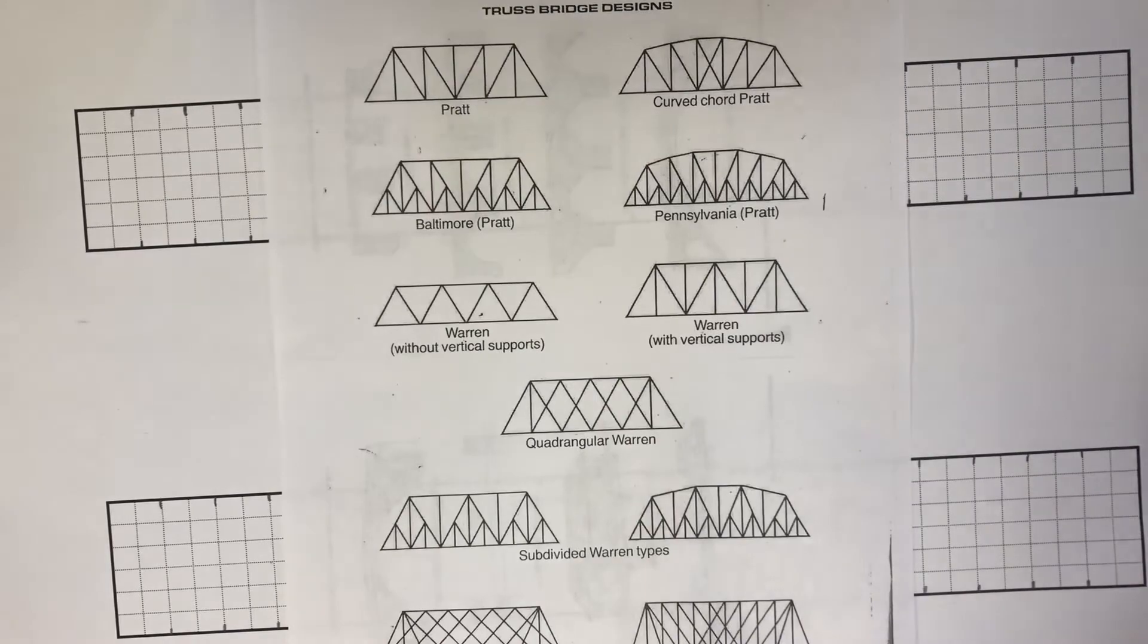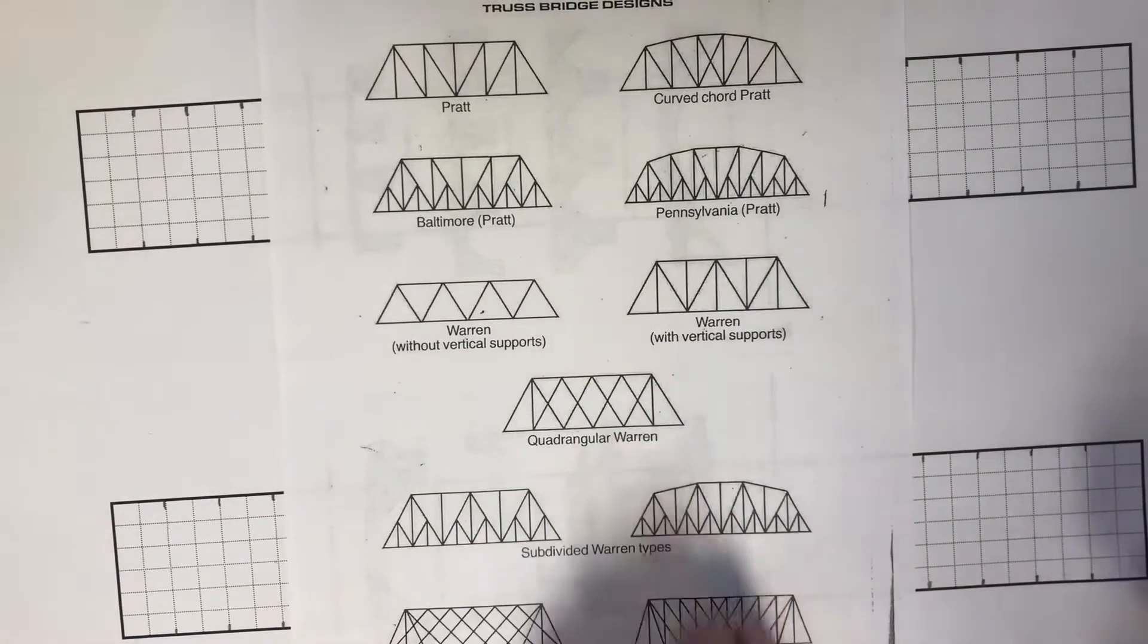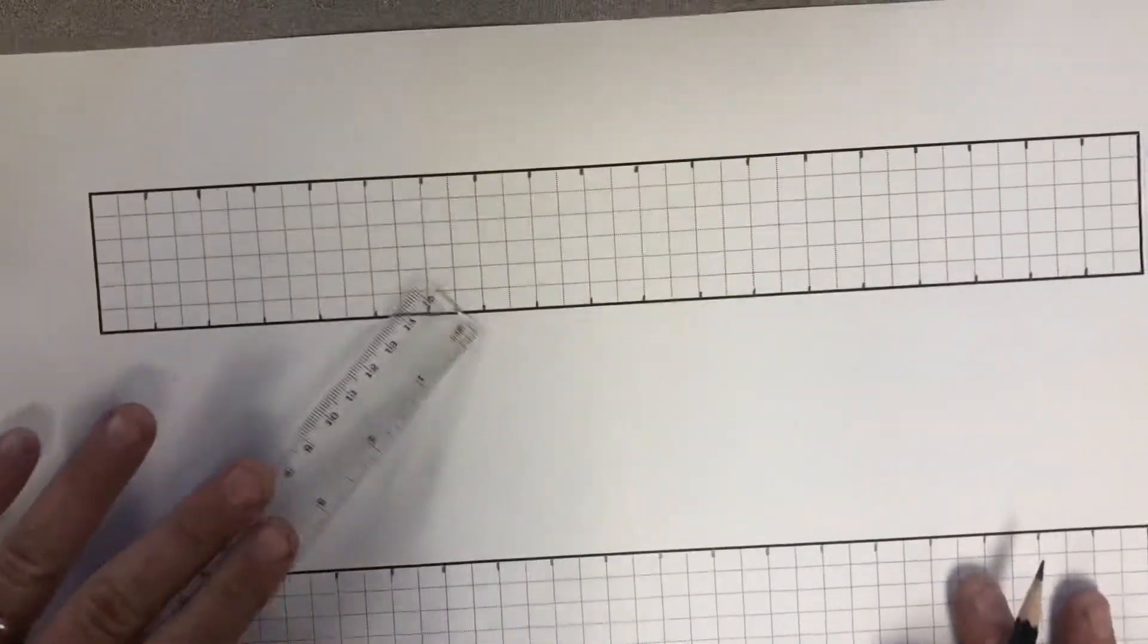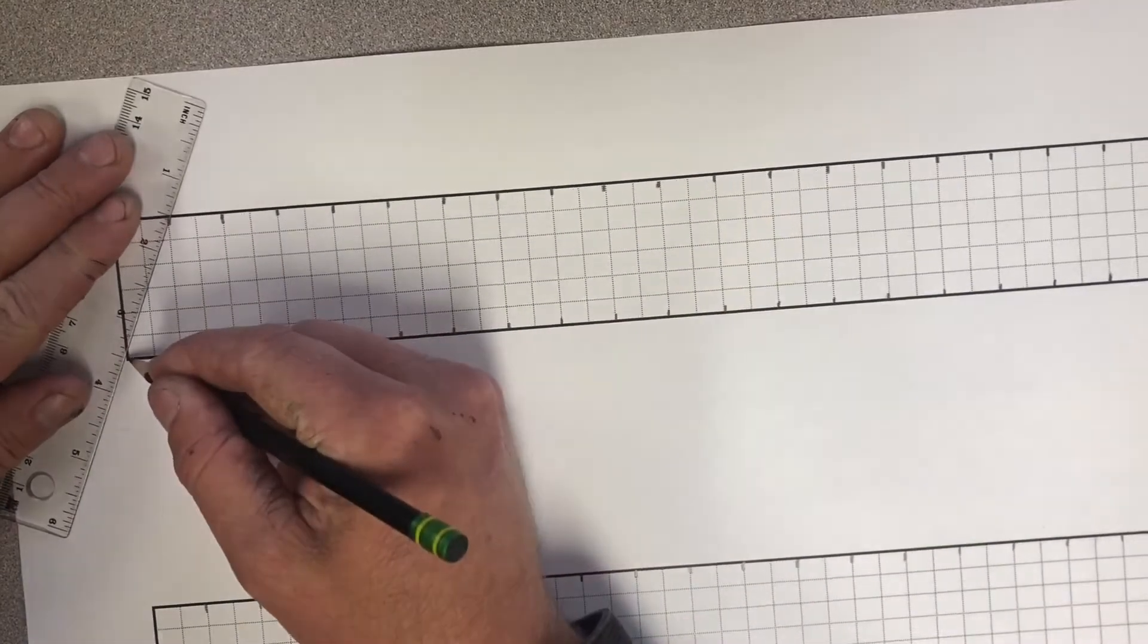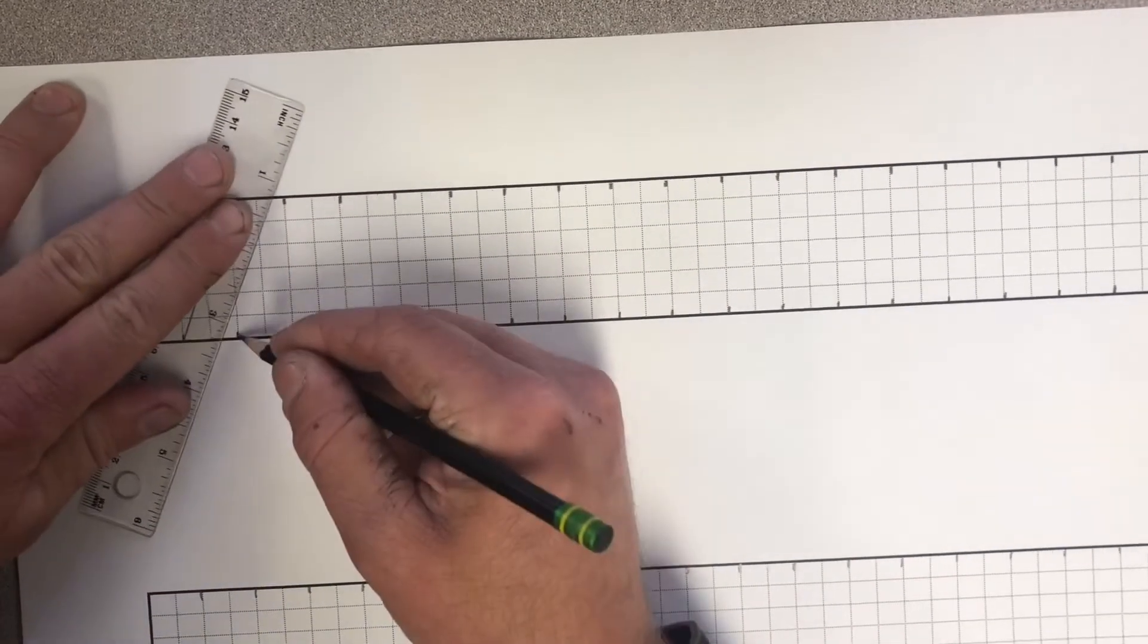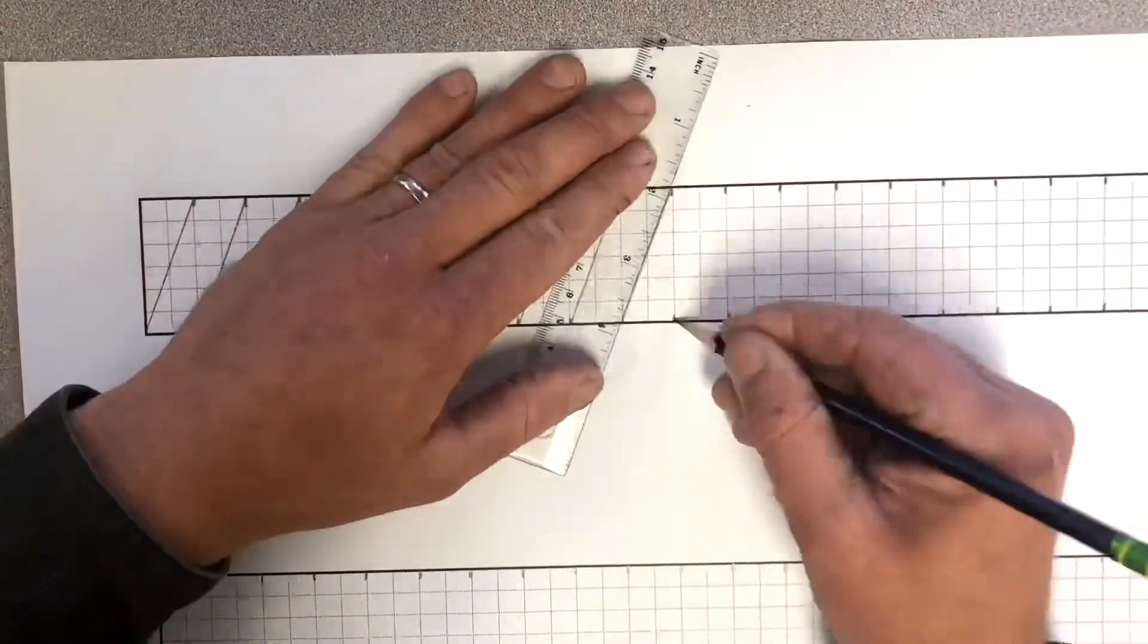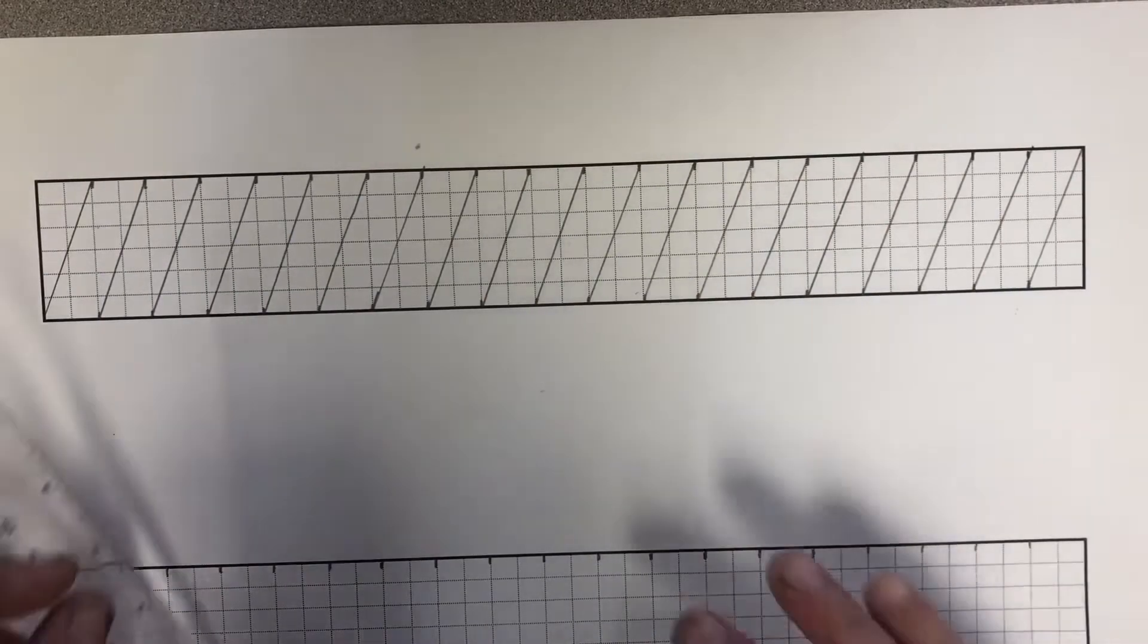I personally am going to build this quad wrangle warren that creates these diamonds in the center. So I'm going to grab my ruler and start on one side and do a diagonal going to the right. And then I'm going to come back after I have done all of those. And now I'm going to do diagonals going in the other direction.